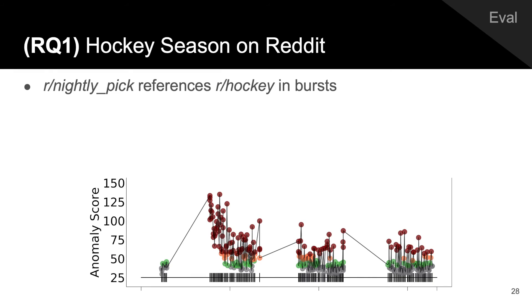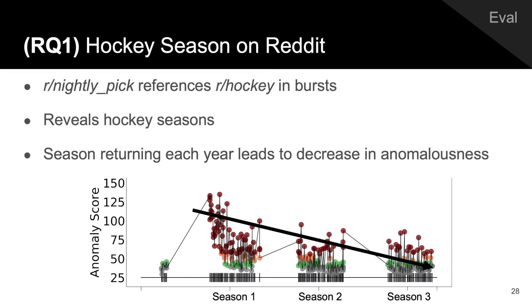Beyond just subtly persistent anomalies, PenMiner can also flag bursts of activity in real-time, such as the subreddit r slash nightlypick referencing r slash hockey in bursts corresponding to hockey seasons, presumably picking winners for each night hockey game. Each returning hockey season leads to a decrease in anomalousness.